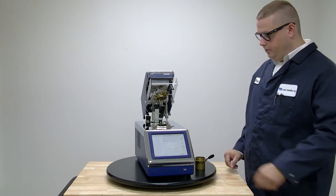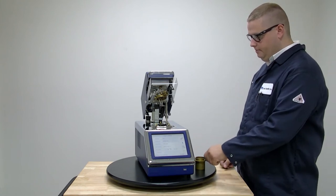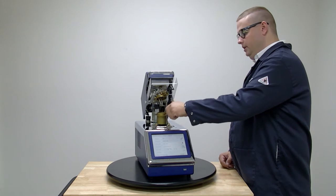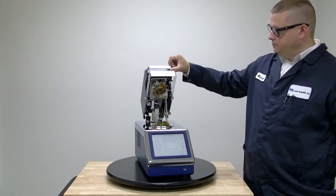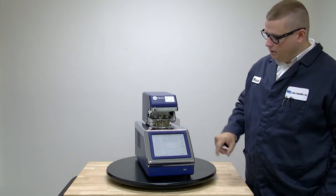At this point we'll take our sample cup, which we filled up with 75 mils of sample. We'll put it into the instrument, close the lid, and press go.